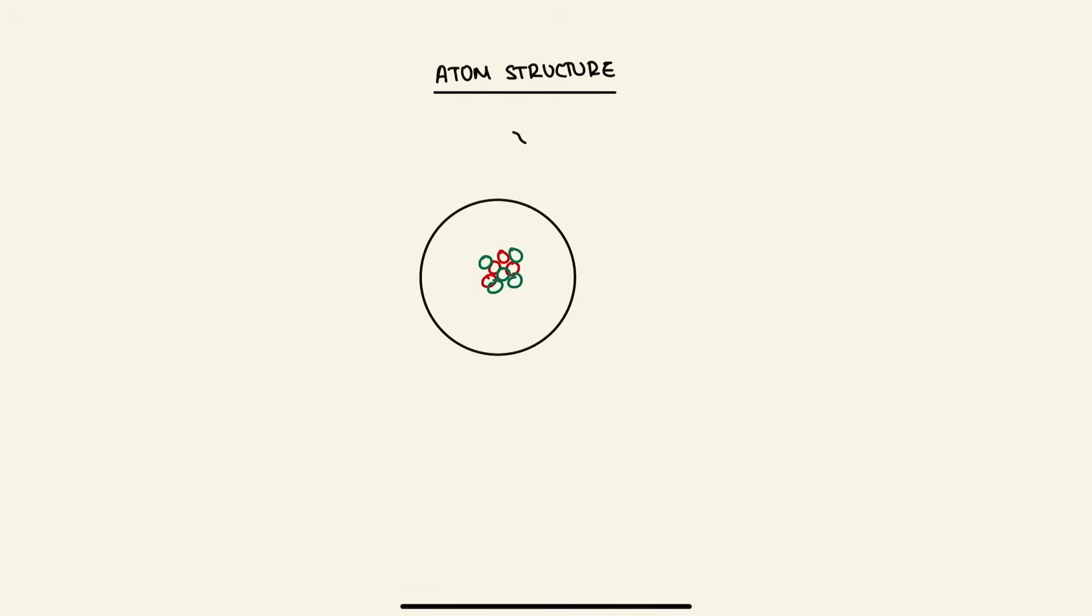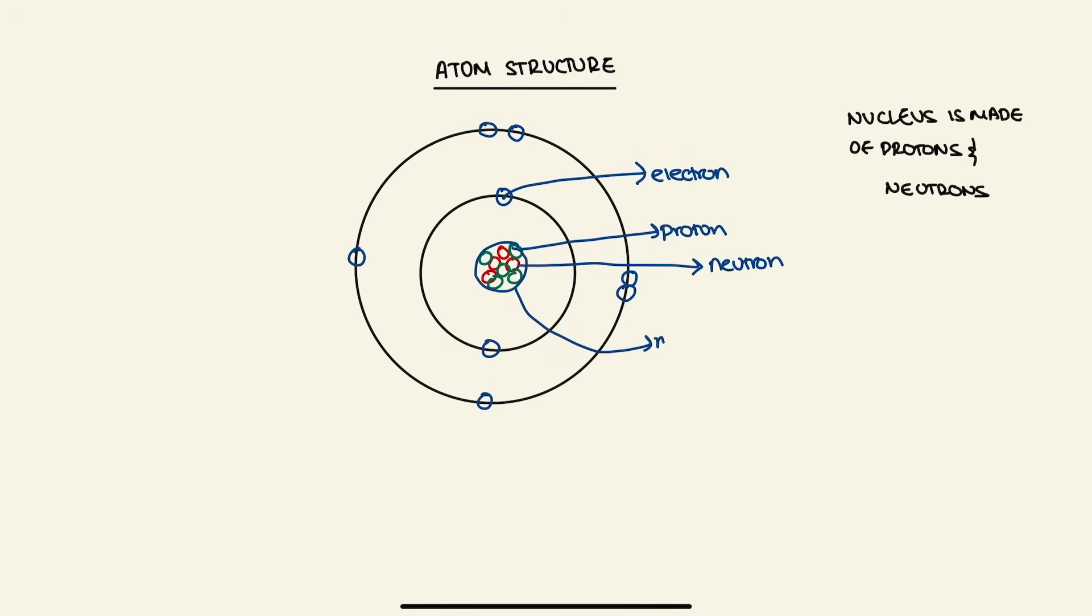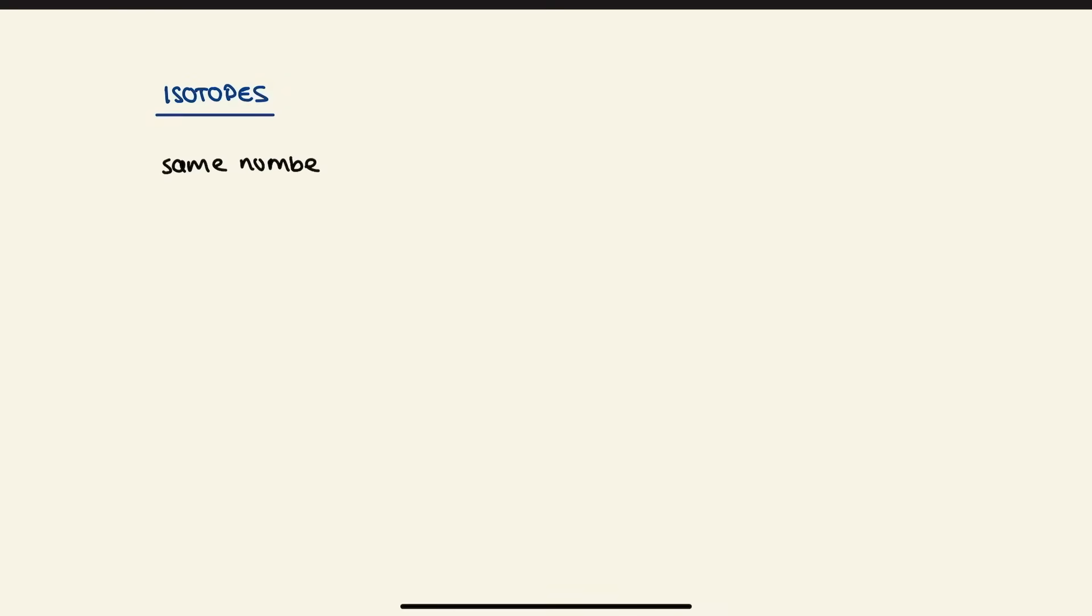Atoms consist of protons, neutrons, and electrons in a shell around a nucleus. The number of protons defines the element, which is the atomic number, while the total number of protons and neutrons give the atomic mass. Isotopes are atoms with the same number of protons but different number of neutrons.